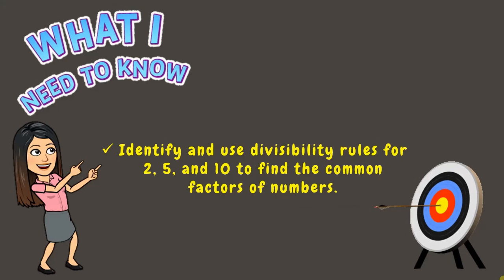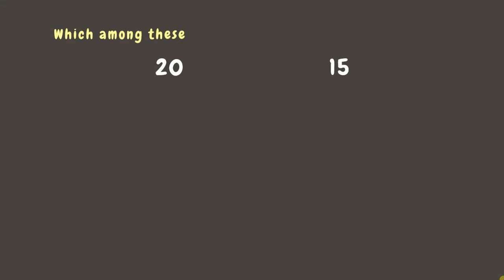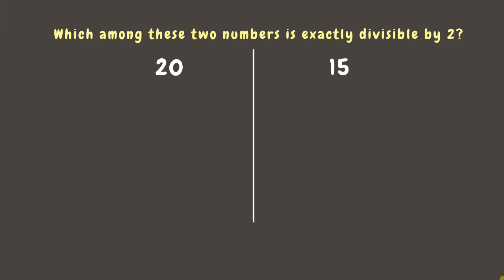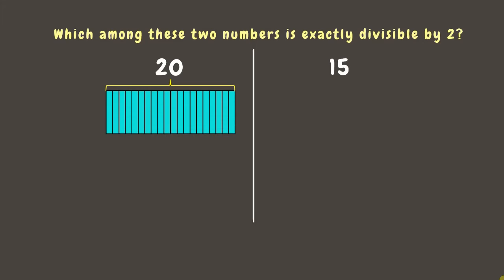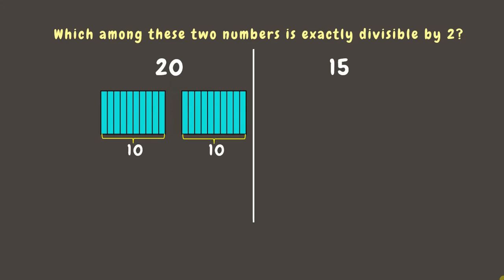Let's get started! We have here numbers 20 and 15. Which do you think among these two numbers is exactly divisible by 2? Let's try to divide these numbers by 2 using rectangle models. Here we have 20 rectangles. If we divide it into 2, we'll have 2 sets of 10 rectangles. This means that 20 divided by 2 is 10.